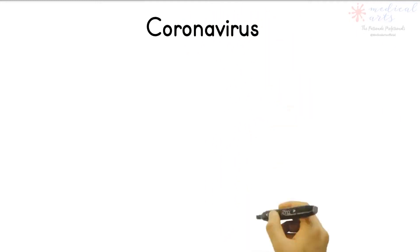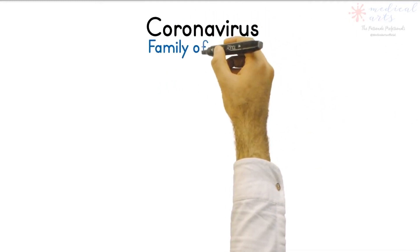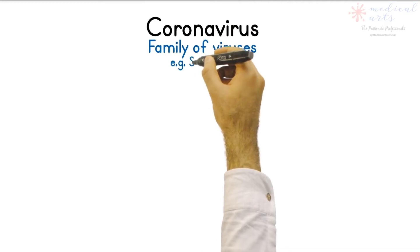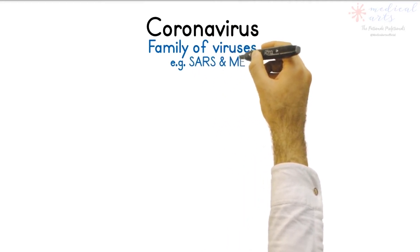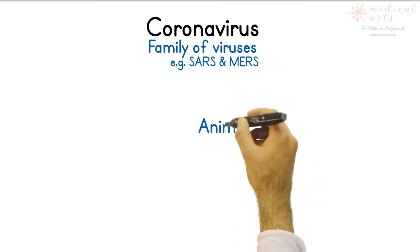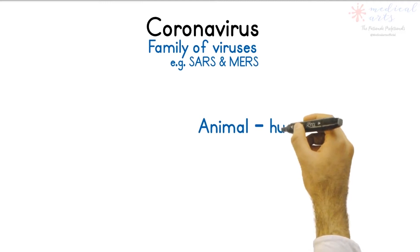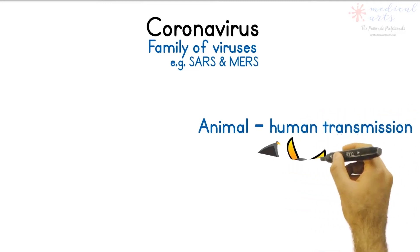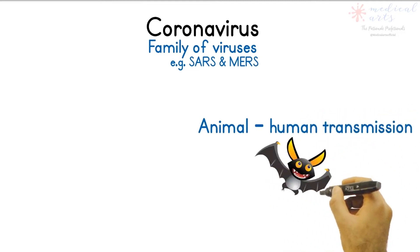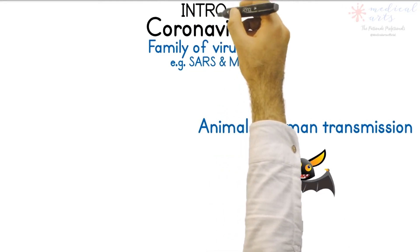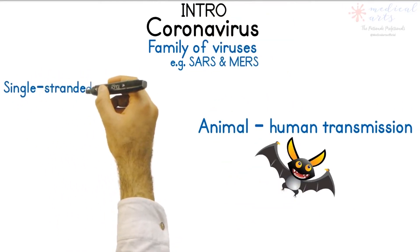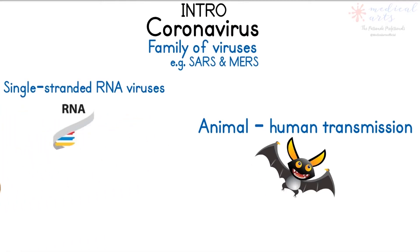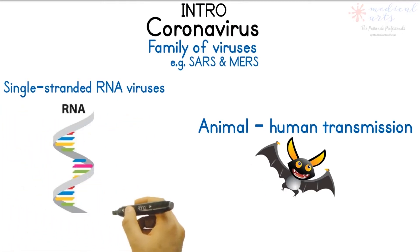Coronaviruses comprise a vast family of viruses, some of which are known to cause disease in humans. Severe Acute Respiratory Syndrome and Middle East Respiratory Syndrome are examples of coronaviruses that jumped from animals to humans. COVID-19 is defined as an illness caused by a novel coronavirus called Severe Acute Respiratory Syndrome Coronavirus 2.